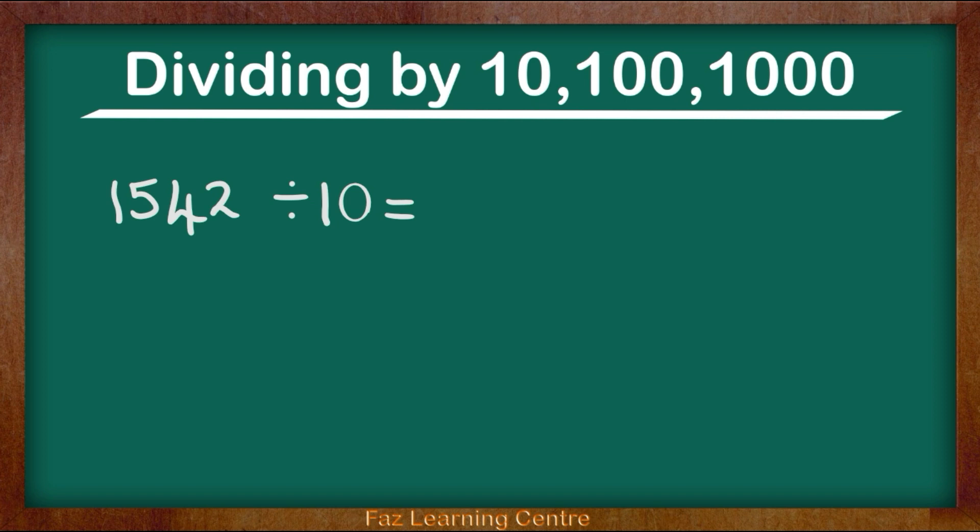So for example, if you look later on, if you get a chance, look at a calculator. When you type in the number 5, there will be a decimal next to it. If you type in the number 18, there will be a decimal next to it. Because every single whole number has a decimal which is invisible. But you can bring it in and make it visible whenever you need.